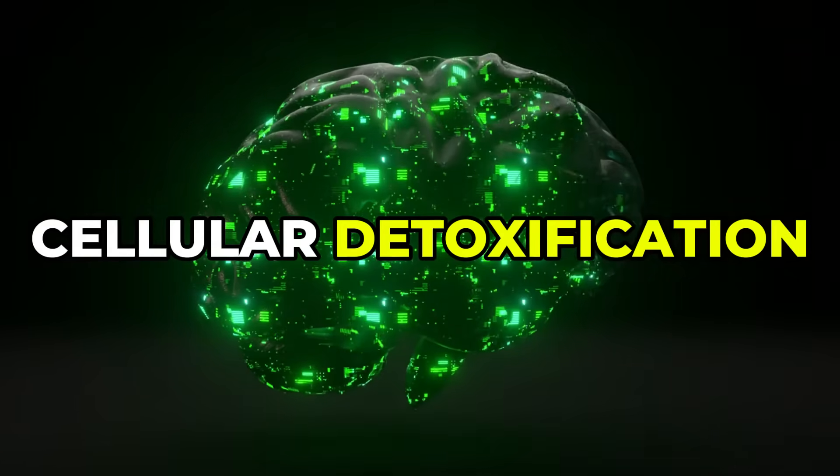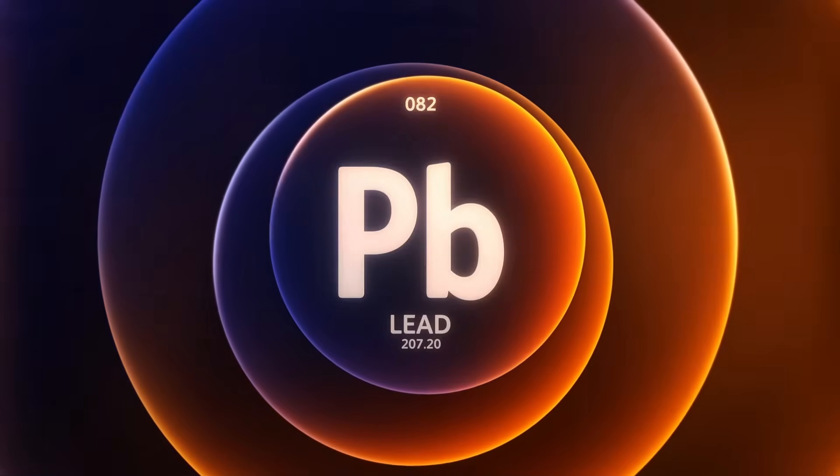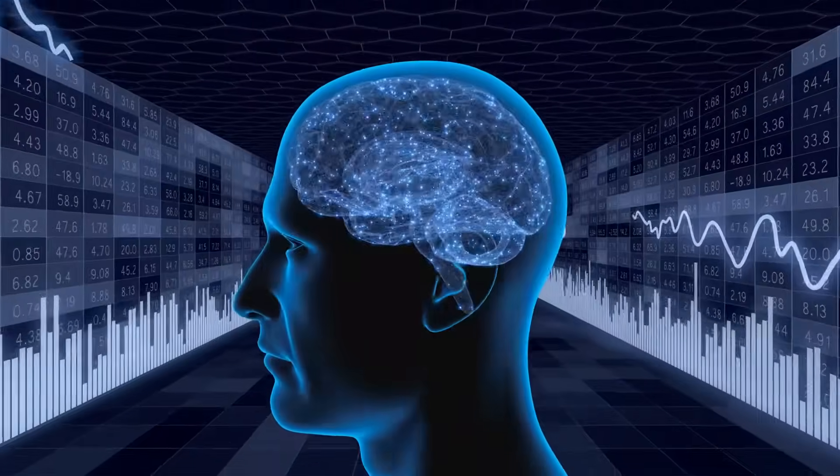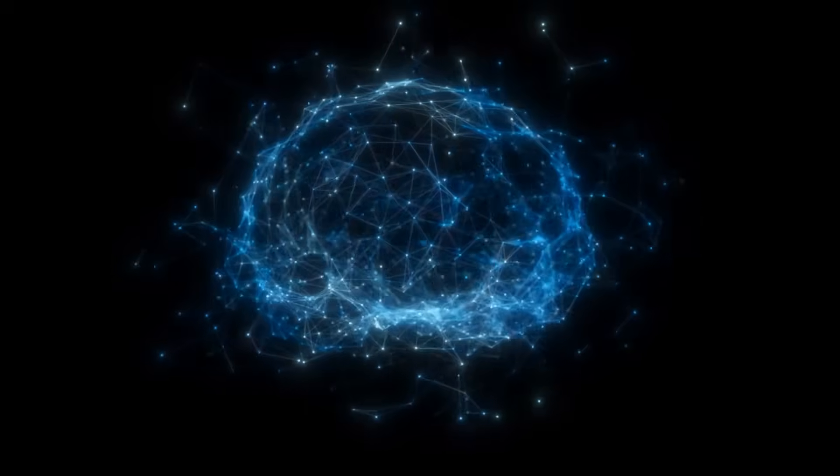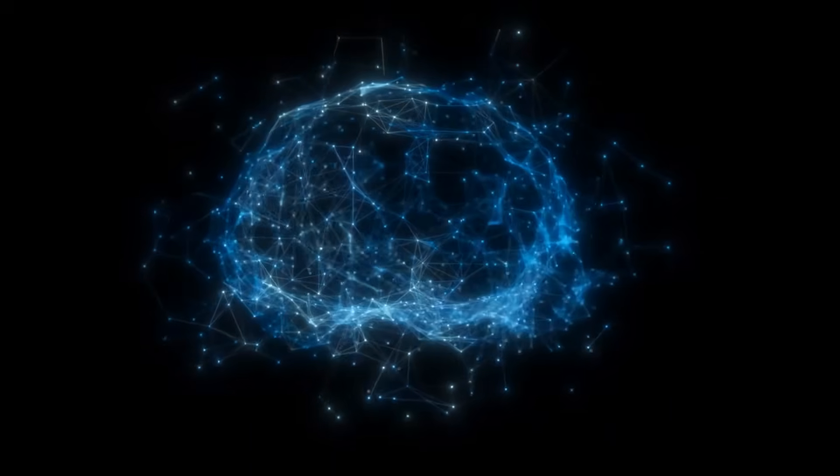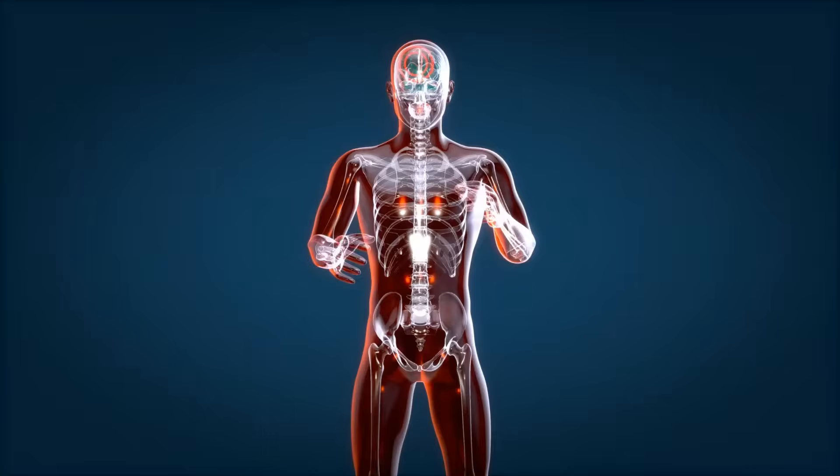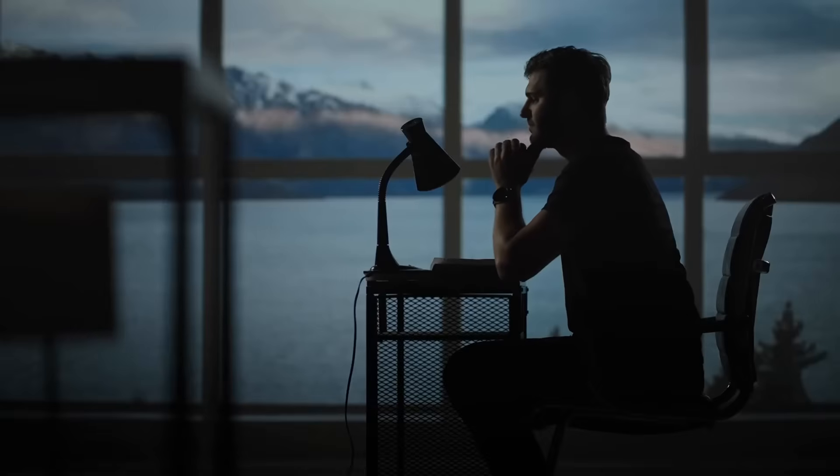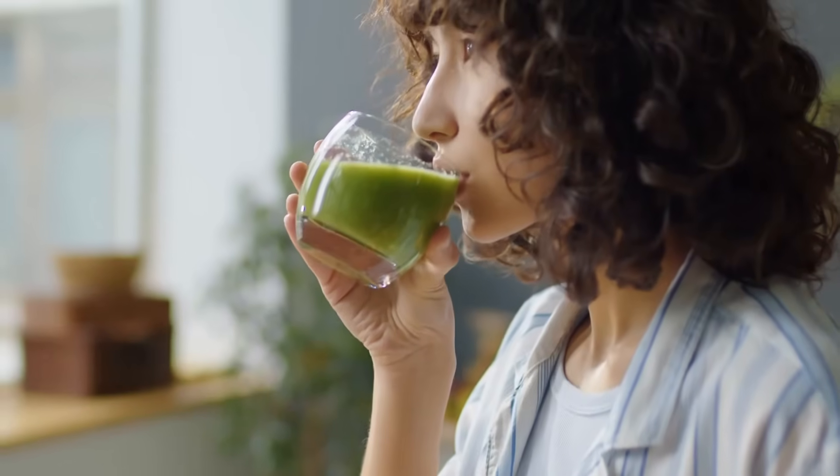Next comes detoxification. Your brain is extremely sensitive to toxins. Things like heavy metals, pesticides, air pollution, and even by-products from your body's own metabolism. Over time, these compounds build up and interfere with brain function. When cells become toxic, they stop communicating properly. Inflammation rises. Neurotransmitter production is disrupted. Emotional regulation breaks down. The result? Mood swings, anxiety, and even cognitive decline.